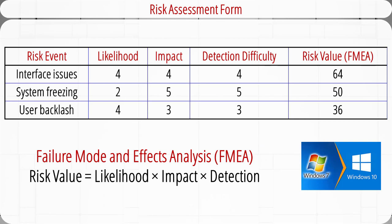Scenario analyses are commonly used in various risk assessment forms. This is a simplified example of a risk assessment form used in an information system project involving the upgrade from Windows 7 to Windows 10. This table lists three different risk events. Users may have to go through a long learning process to adapt to the new Windows 10 interface during the conversion period — the likelihood of interface-related problems is 4 out of 5, the impact is 4 out of 5, and the detection difficulty is 4 out of 5, meaning this type of problem is difficult to detect. Some users may occasionally experience system freeze when starting the computer: the likelihood is low at 2 out of 5, but the impact is high at 5, and it's rather difficult to detect because many reasons may cause a system freeze problem that only occurs occasionally and is sometimes not reproducible.